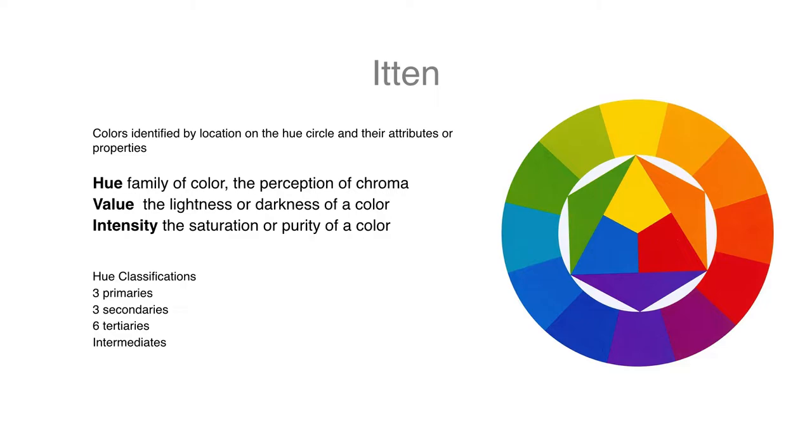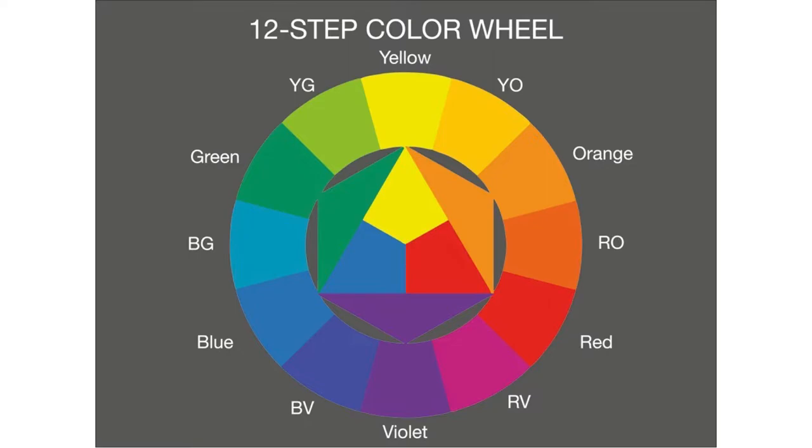and a certain degree of saturation or dullness. He classified his hues into primaries, secondaries, and tertiaries, and also allowed for intermediate colors, which can be broken out of the 12-hues.